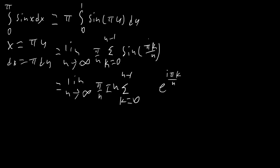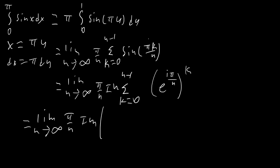Our limit becomes the limit as n goes to infinity of pi over n times the imaginary part of (e to the i pi n over n minus 1) over (e to the i pi over n minus 1). Since n over n is 1, the numerator is e to the i pi minus 1. And e to the i pi is nothing but negative 1, so the numerator is just negative 2.